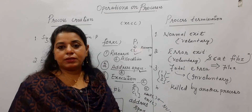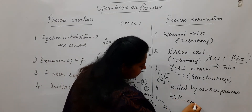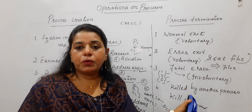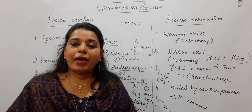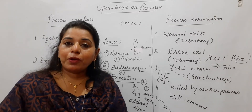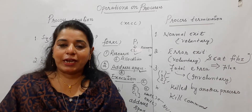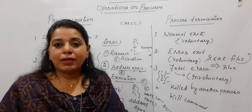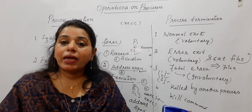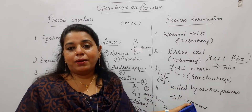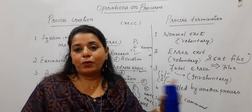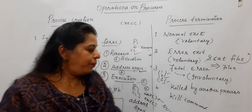The fourth type is being killed by another process using the kill command — this is also involuntary. However, only a parent process can kill its child process. The authority to kill is only given to the parent. A parent kills a child process in situations where the child is using more resources than were allotted by the parent. Only the processes created by the parent — the child processes — can be killed this way.